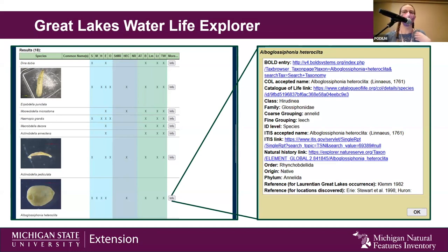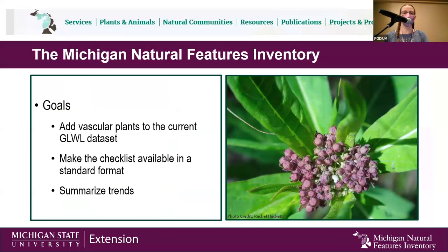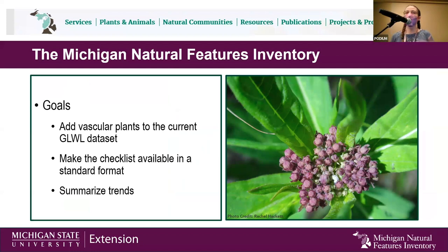From the title of my talk, you know that this is about vascular plants in the Great Lakes. This database so far is entirely lacking in vascular plants. That's where myself and my co-workers at the Michigan Natural Features Inventory were brought on board the project to provide some taxonomic and vascular plant expertise. Our main goal was to add vascular plants to the current database, but we also wanted to make this checklist available in a more standardized format and to summarize whatever trends we found in plants along the way.